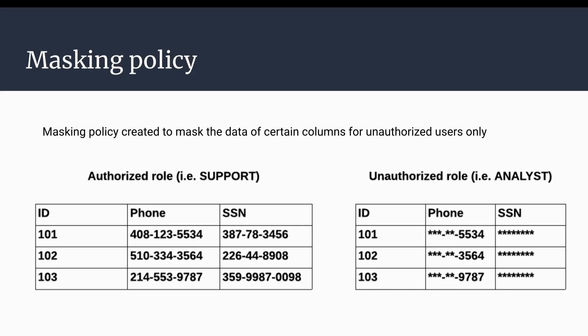In this example you can see there are two types of roles: authorized roles and unauthorized roles. For a support role they will be able to see the entire data, while for the analyst role they will only be able to see certain part of the phone number, and there is no data visibility for the SSN — it just shows dots for them.